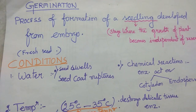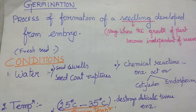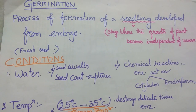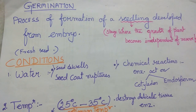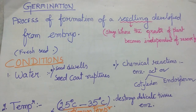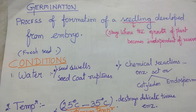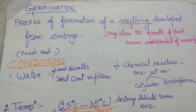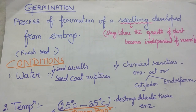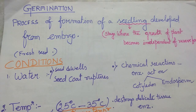After the seed is formed, when we soak it in water or put it in the soil, it germinates — small white color structures come out. This process is called germination. The process of formation of a seedling developed from an embryo is called germination.